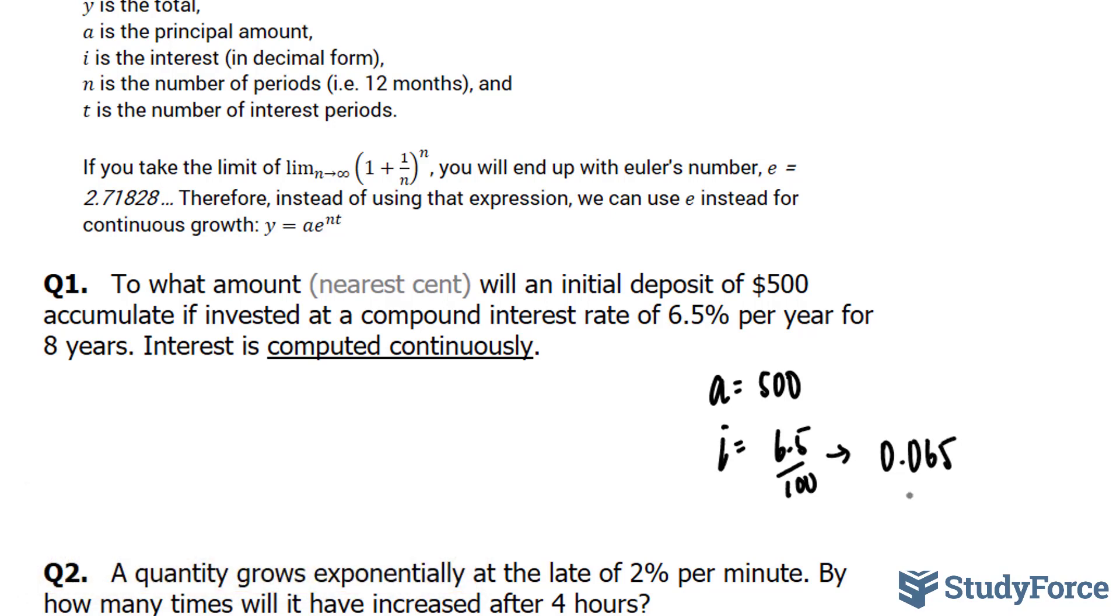Furthermore, we are told that it will happen for the next 8 years. Our t value will be 8. And now we have all the information we need to plug into this equation, where we have y equals 500e to the power of nt. And here n represents our interest rate of 0.065, and t represents the number of interest periods, which is 8.